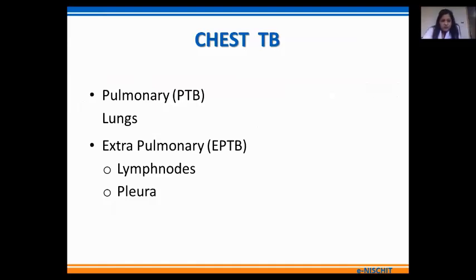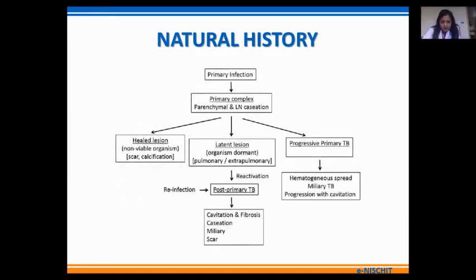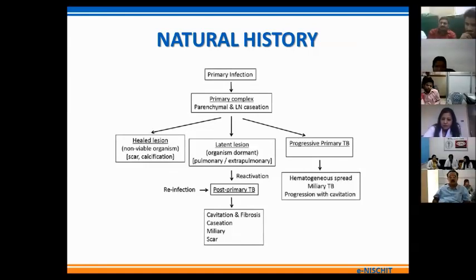Tubercular affliction of the chest is divided into pulmonary TB when the lungs are affected, or extra-pulmonary TB if it involves the pleura or the lymph nodes. TB is classically divided into the primary form or the post-primary form. The radiological manifestations of primary and post-primary are quite different, though there is considerable overlap. Primary tuberculosis is characterized by lymph nodal involvement with few parenchymal infiltrates, while in the post-primary form we have extensive parenchymal involvement along with cavitation, fibrosis and scar formation.